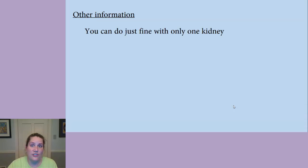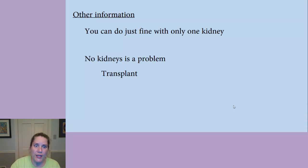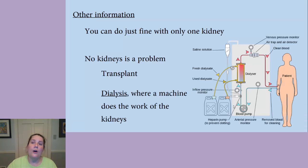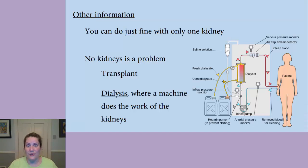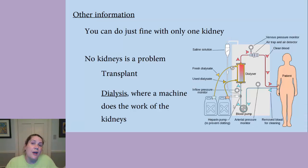You can actually do just fine with only one kidney, but having no kidneys is a problem. You have a couple of options: you can get a transplant from a donor, or you can do dialysis. Dialysis is basically where a machine does the work of the kidneys for you — instead of your blood going to your kidneys to be filtered and returned, it goes to a machine, gets filtered, and comes back in. The problem is you have to go three to four times a week for four or five hours at a time. So if someone you love needs a kidney and you're a match, it's worth considering being a donor.